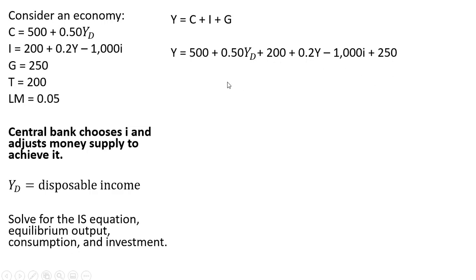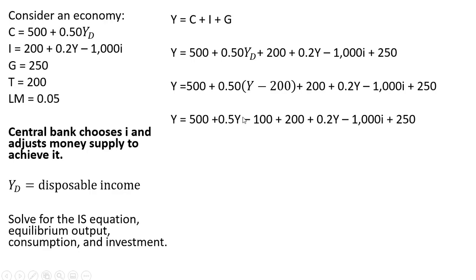Now let's take care of disposable income, which is just income minus taxes. So Y minus 200 is what we're replacing Y subscript D with. Now let's collect some of the terms here. First thing I'll do is I'll multiply this 0.5 by Y, and then this 0.5 multiplied by negative 200.